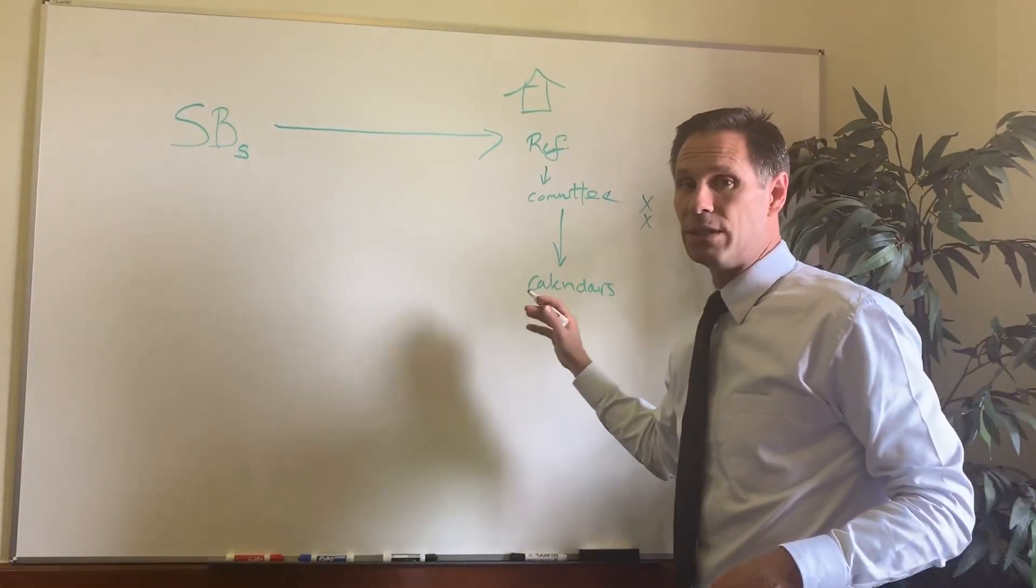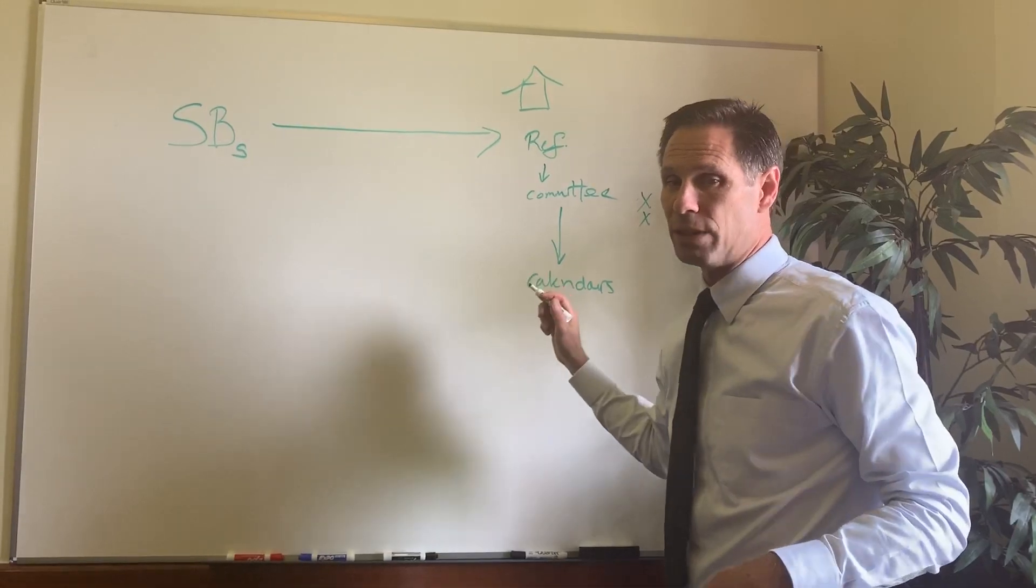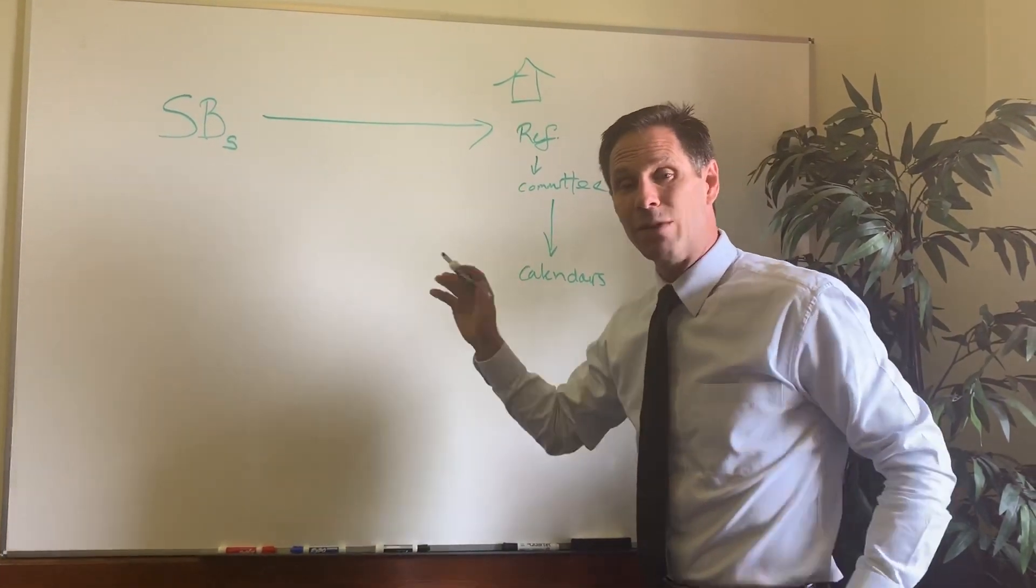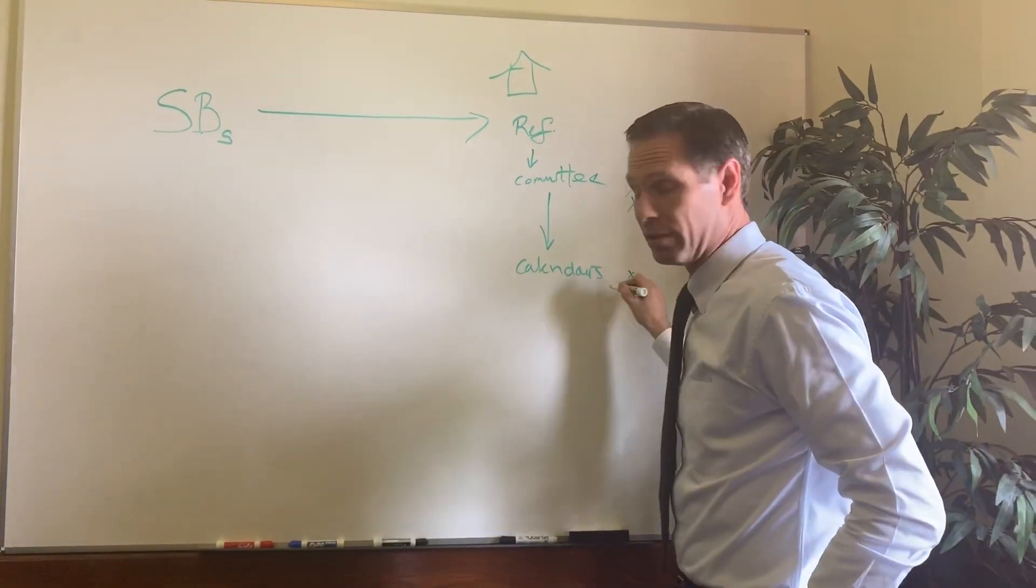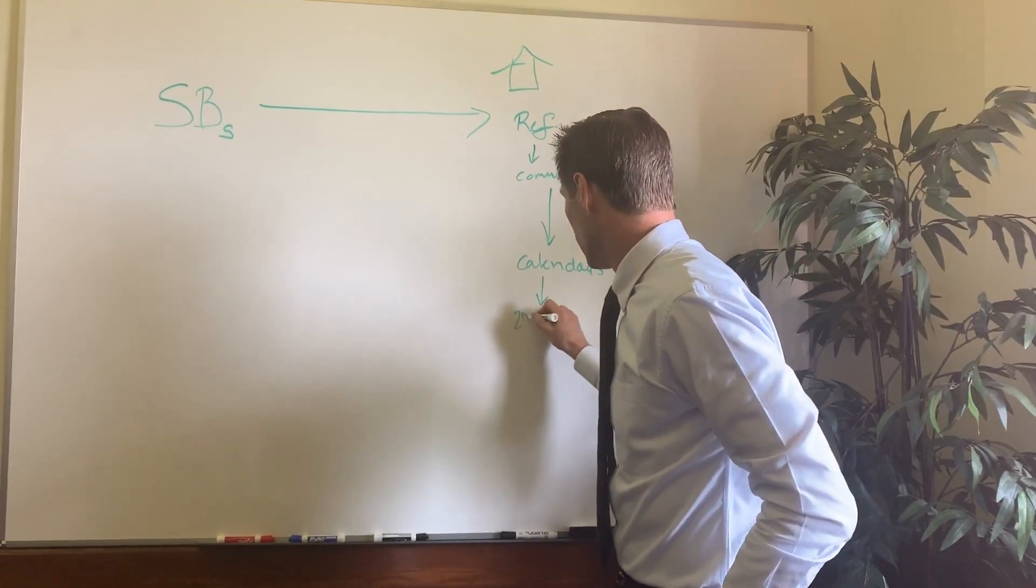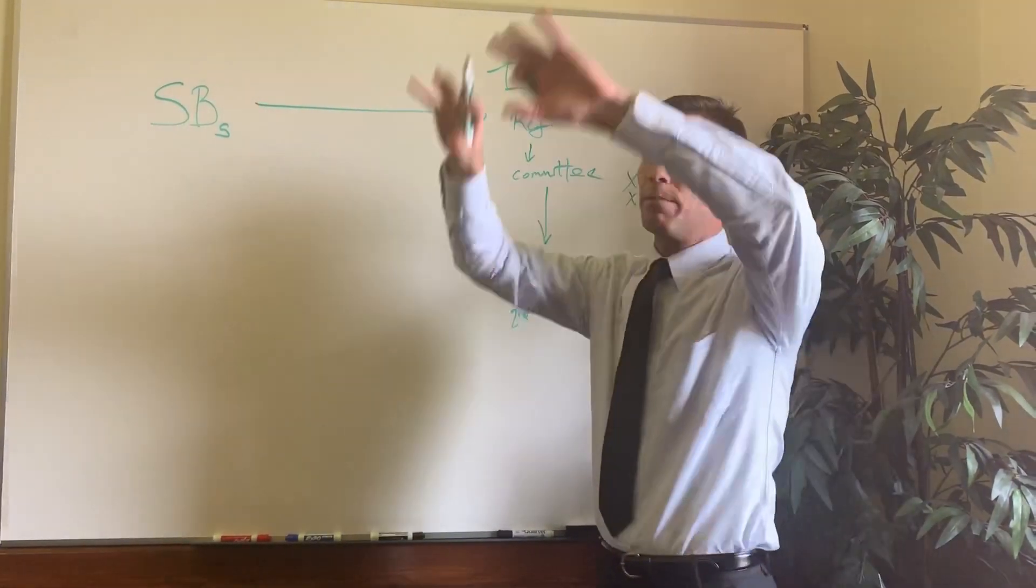If the Calendar's Committee is not too busy, and they're really, really busy with thousands of bills, they'll refer it, or they'll set a calendar date. If they don't get to it, it dies. If they do get to it, they set it for a hearing called Second Reading on the House floor.